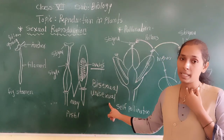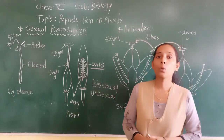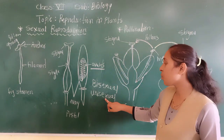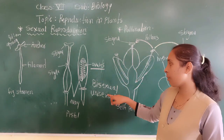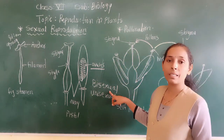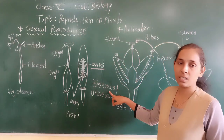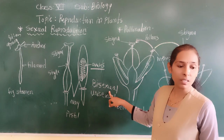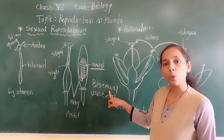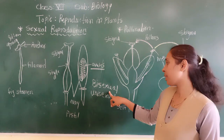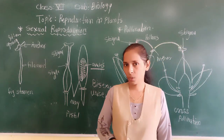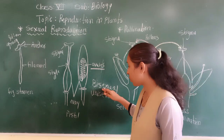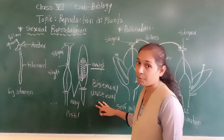For example, papaya and cucumber — these flowers are unisexual flowers. While hibiscus, mustard, and rose are bisexual flowers, as they contain both the stamen and the pistil.